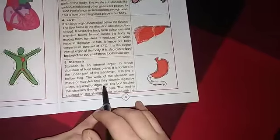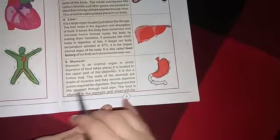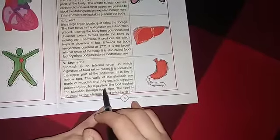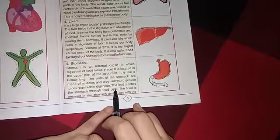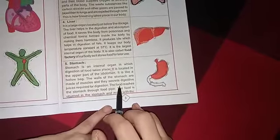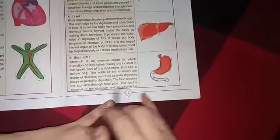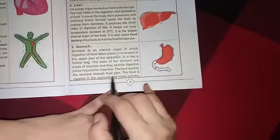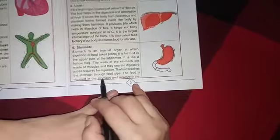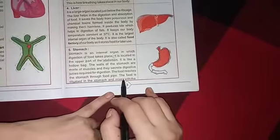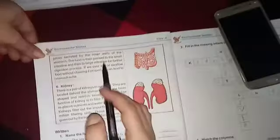The walls of the stomach are made of muscles and they secrete digestive juices required for digestion. The food reaches the stomach through the food pipe. The food is churned in the stomach and mixed with juices secreted by the inner wall of the stomach.